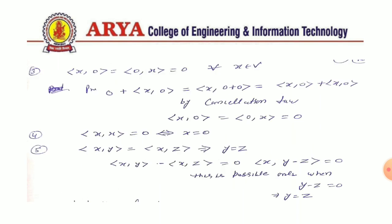The third property is: inner product of (X, 0) equals inner product of (0, X) equals 0. The fourth property is: inner product of (X, X) equals 0 if and only if X equals 0. We can prove the third property by writing inner product of (X, 0) as inner product of (X, 0+0). By applying the definition and separating, then using the cancellation law, we get inner product of (X, 0) equals 0. The fourth property follows directly from the definition.